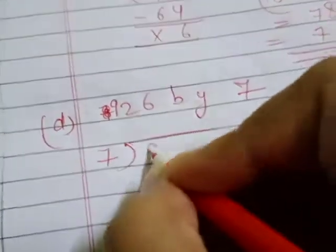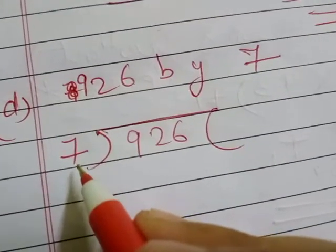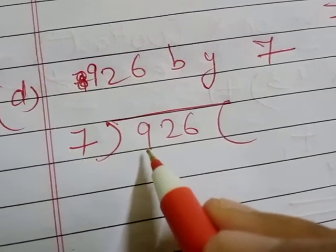First of all, we will write divisor and dividend. Now, if outside one number, inside also we will take one number.